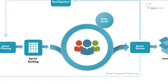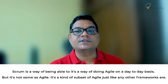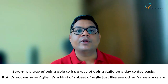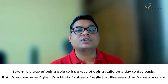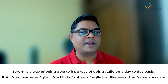So Scrum is a process that you could pick up as a framework and say we are running the sprints, we are conducting all these events, we have these different specialized roles — and we are calling it the Scrum framework. One thing to be careful about, though, is not to confuse agile and Scrum. Scrum is a way of being agile — it's a way of doing agile on a day-to-day basis — but it's not the same as agile. It's a kind of subset of agile, just like any other framework is.